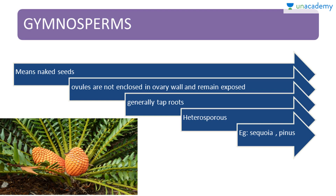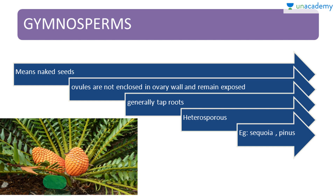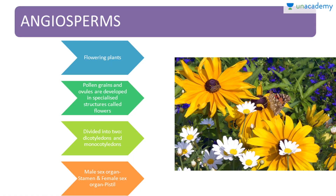Next are the gymnosperms. Gymnosperms means gymno — naked — and sperm — seed — that is, naked seeds. Ovules here are not enclosed in the ovary wall and thus remain exposed. They generally have tap roots and are heterosporous in nature. Examples include Cycas and Pinus.